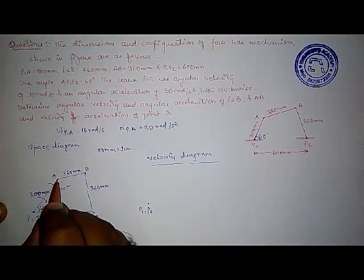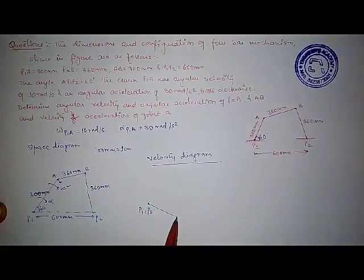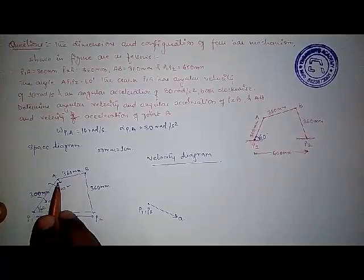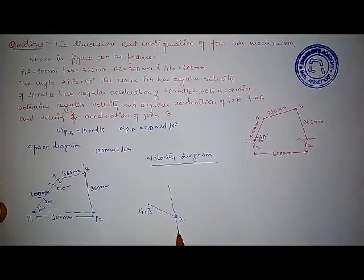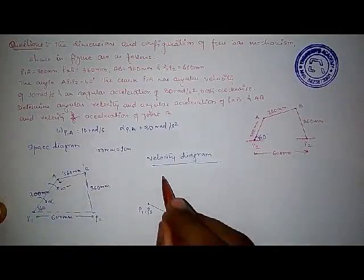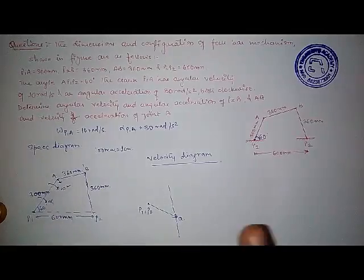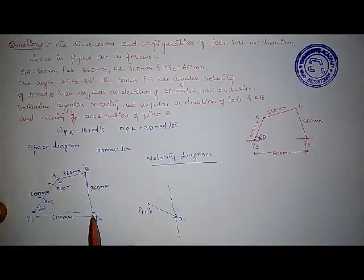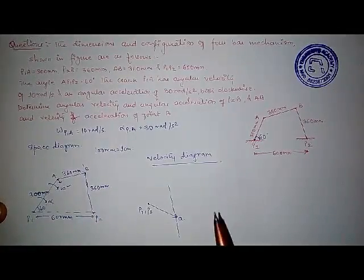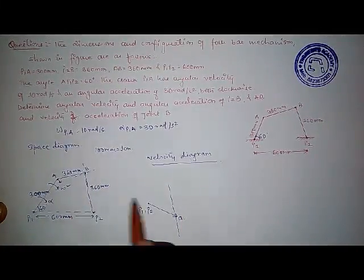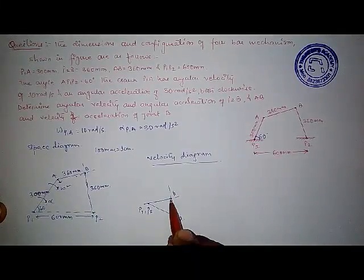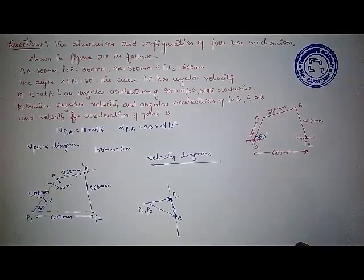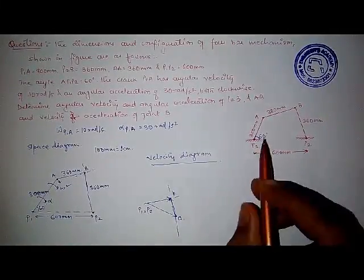We start by finding the velocity of A with respect to P1, which will be perpendicular to link P1A in this direction. Then for link AB, the velocity vector will be perpendicular to this link. We don't know the length since omega of AB is unknown, so we know the direction but not the magnitude — we draw the line but don't fix point B. Similarly, the velocity of B with respect to P2 is found by the vector perpendicular to link BP2, giving us point B. This completes the velocity diagram of the mechanism.